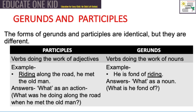The form of gerunds and participles are identical, but they are different. In participles, the verbs are doing the work of an adjective, whereas in gerunds, the verbs are doing the work of nouns. An example of a participle is: 'Riding along the road, he met the old man.' An example of a gerund is: 'He is fond of riding.'